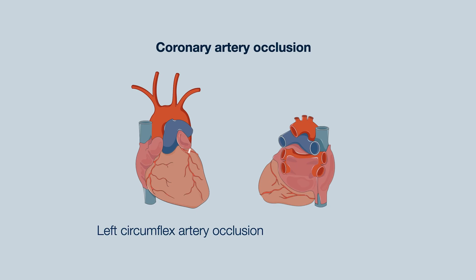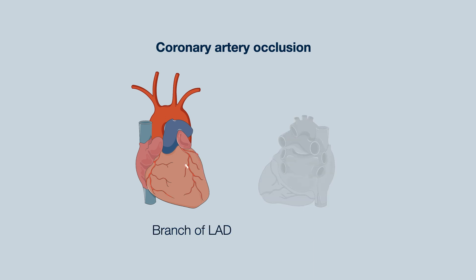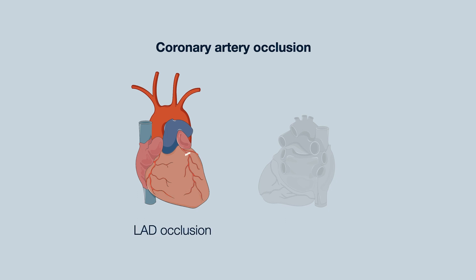Consider the clinical relevance of this. If the left circumflex artery is occluded, this causes a lateral impact. If a branch of the left anterior descending is completely occluded, there will be a septal impact. And if there's proximal occlusion of the left anterior descending artery, there will be an anterior septal impact.